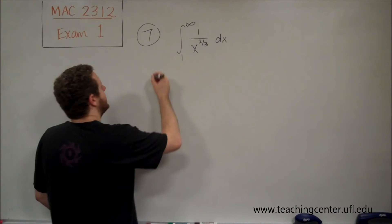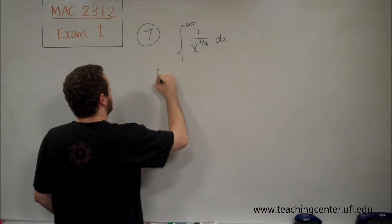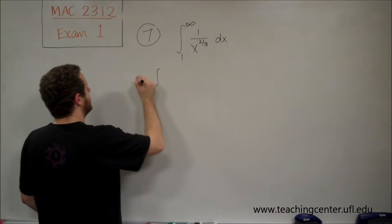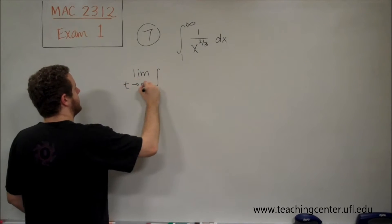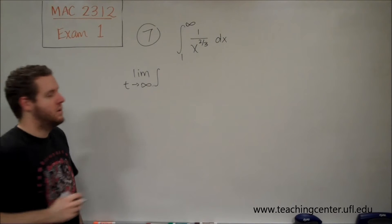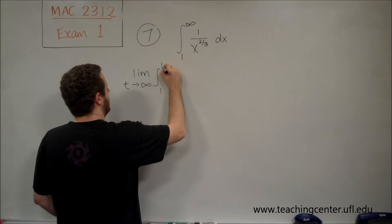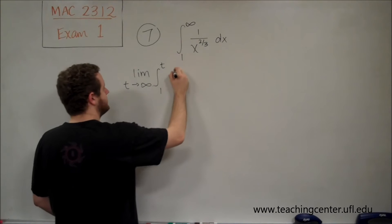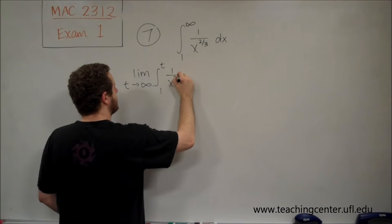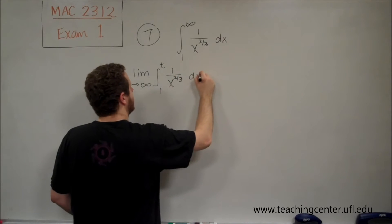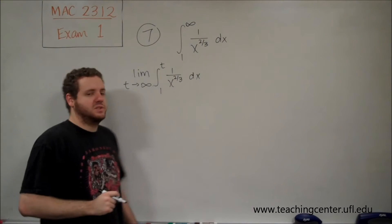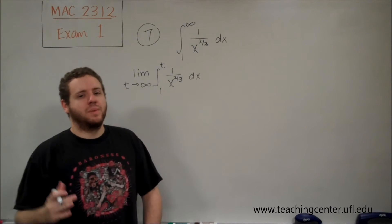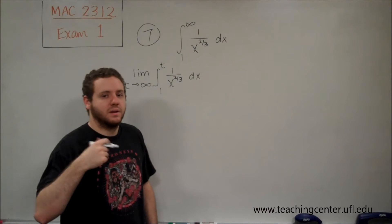What we're going to do here is take the limit as t approaches infinity of the integral from 1 to t of 1 over x to the 2/3 dx. All I did there was just say, okay, we have this upper bound and it's just getting bigger and bigger, and let's see what happens.